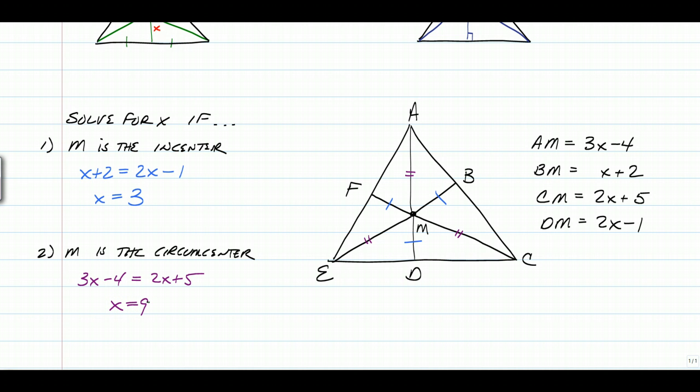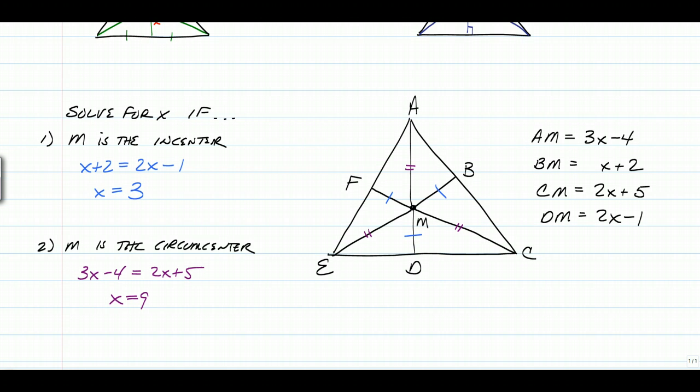So if you got X is 3 for number 1 and X is 9 for number 2, then you did this correctly. If you have them switched, then you just need to revisit what an incenter and a circumcenter are. Last question of the notes.